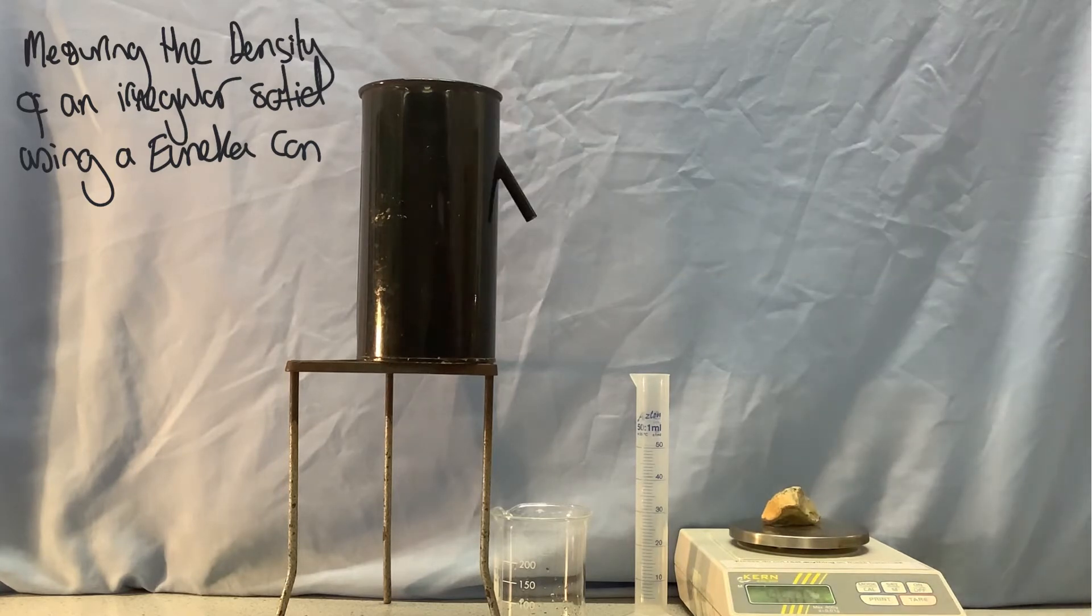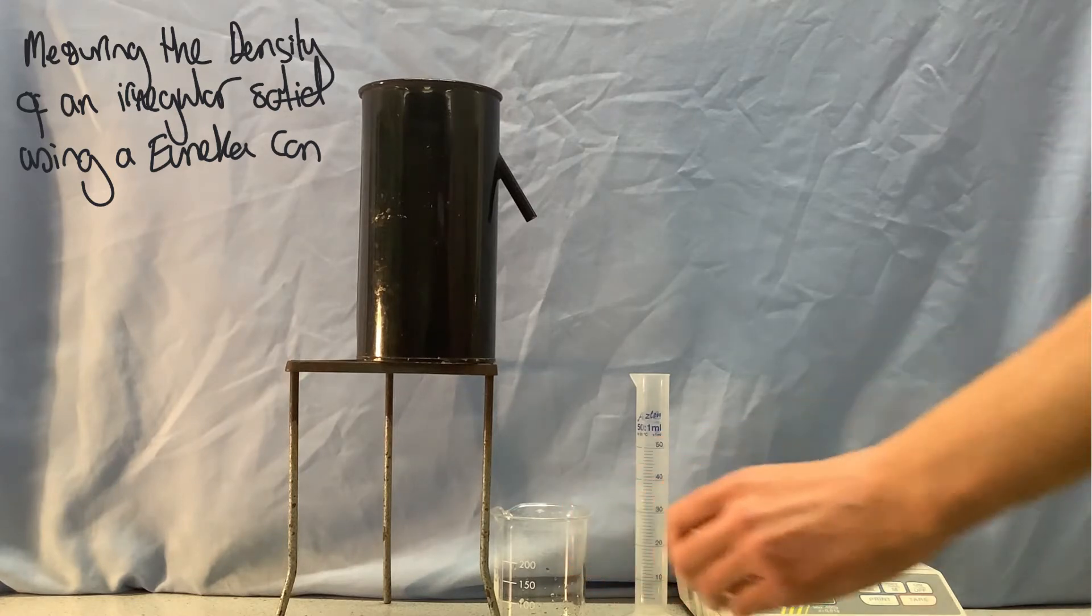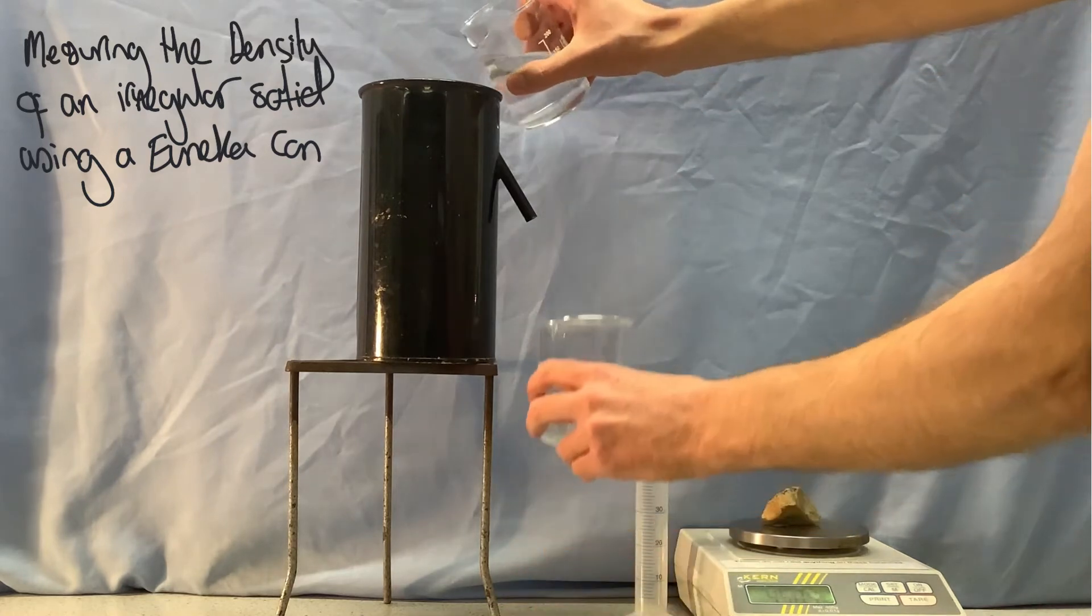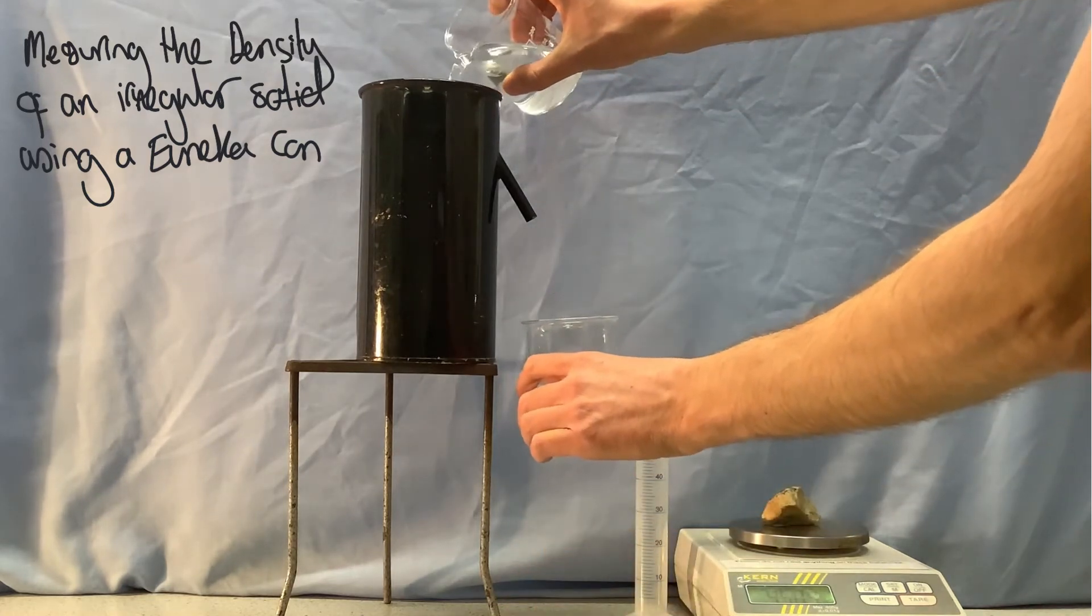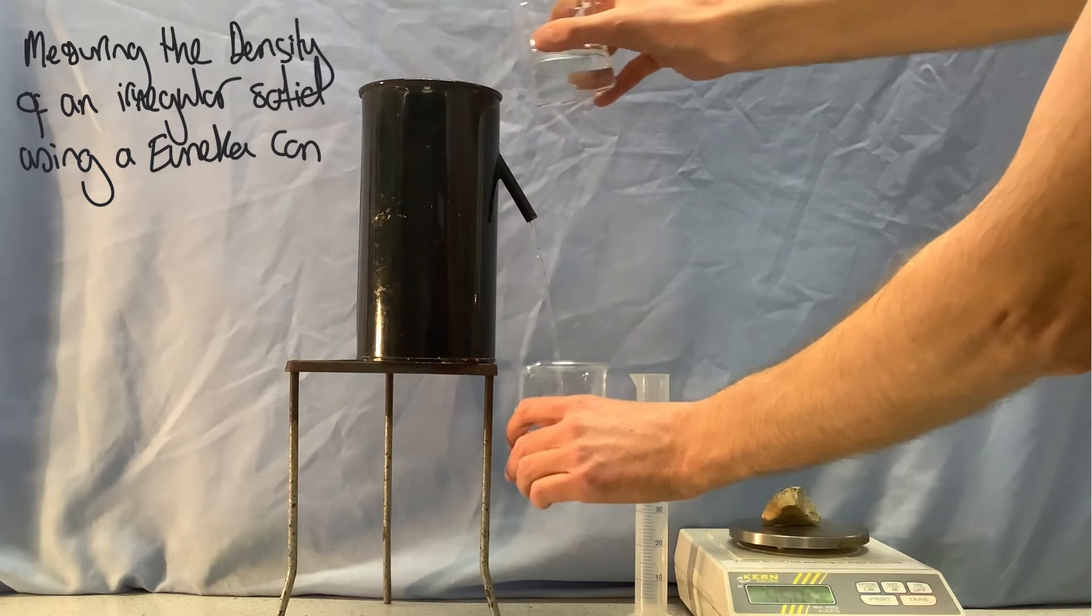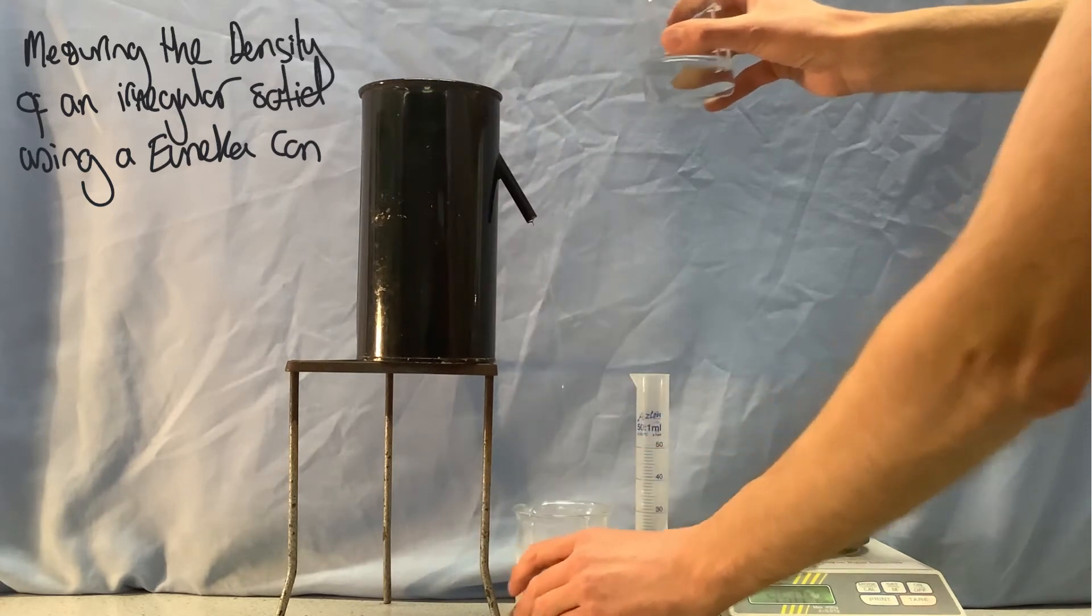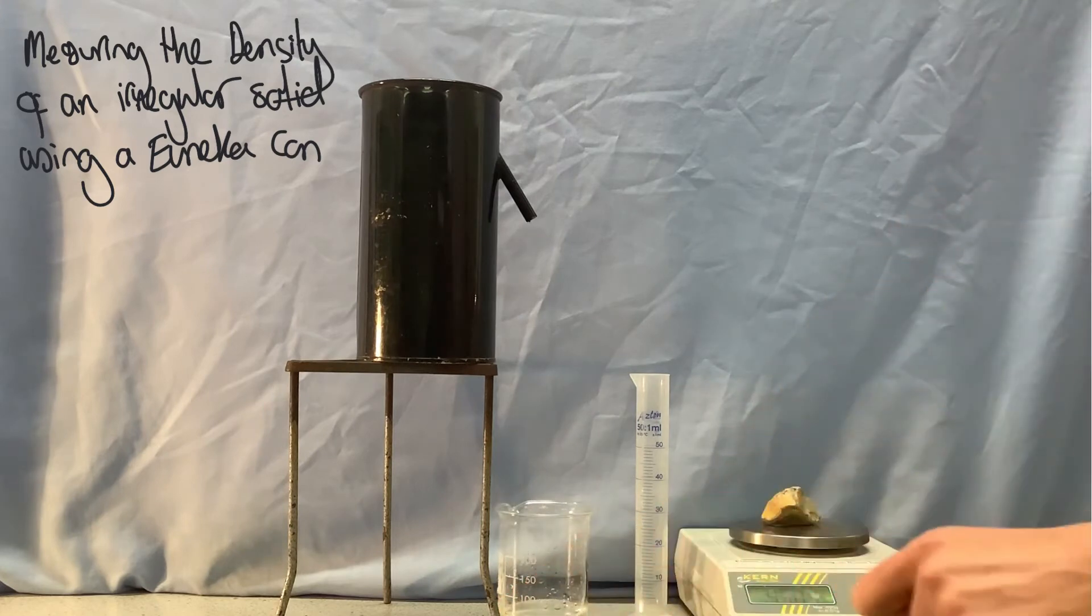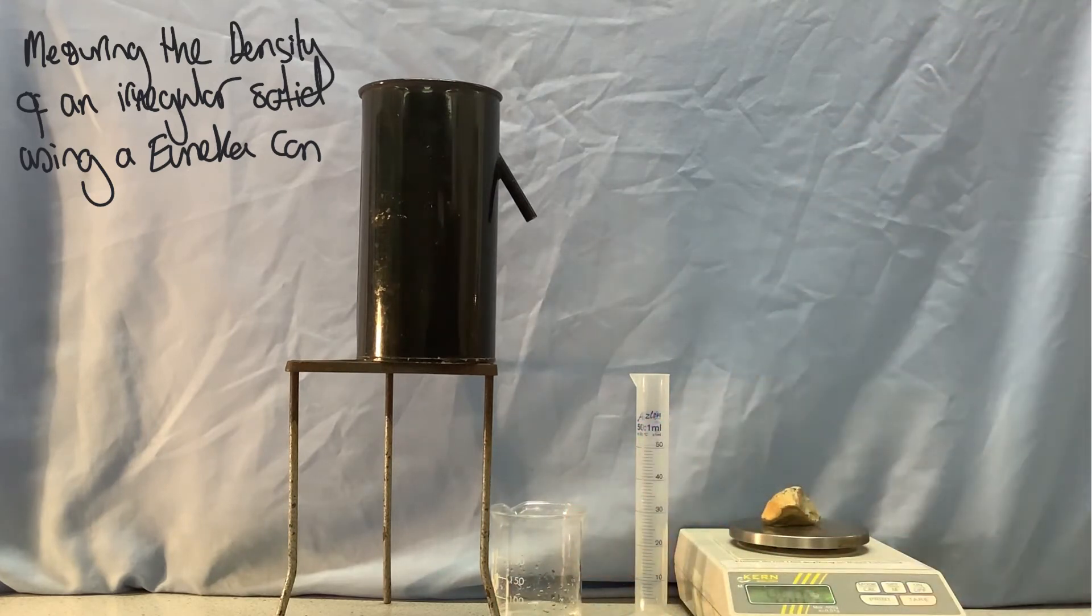The next thing that we need to do is find the volume. We're going to use this Eureka can and we need to make sure that it is filled completely to the top. So the best thing to do is to pour in extra water so that it is definitely overflowing, and then wait a little bit for all of the water to finish dripping out.